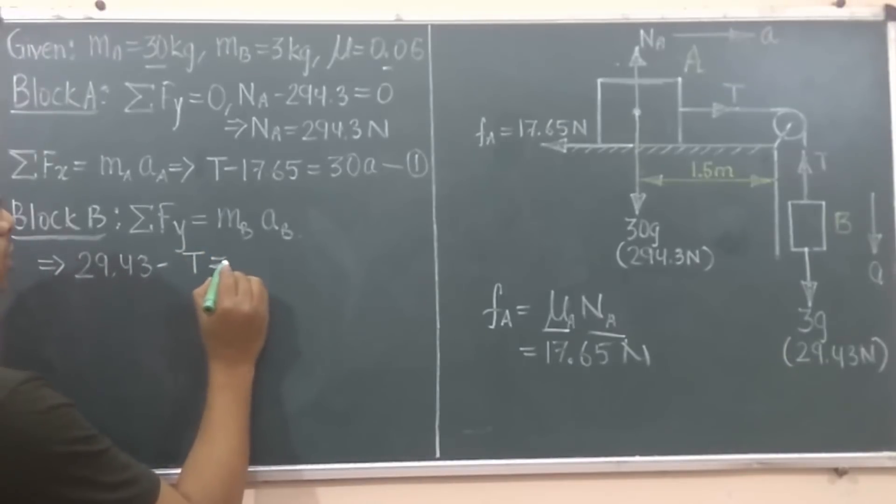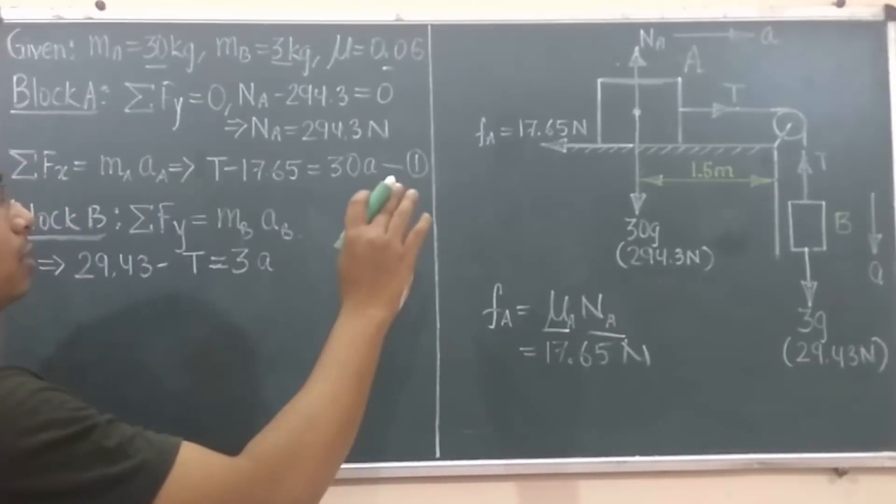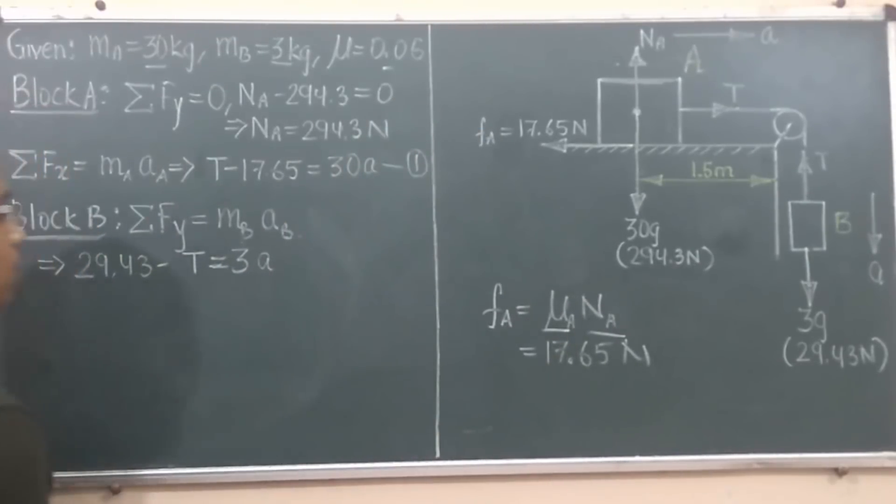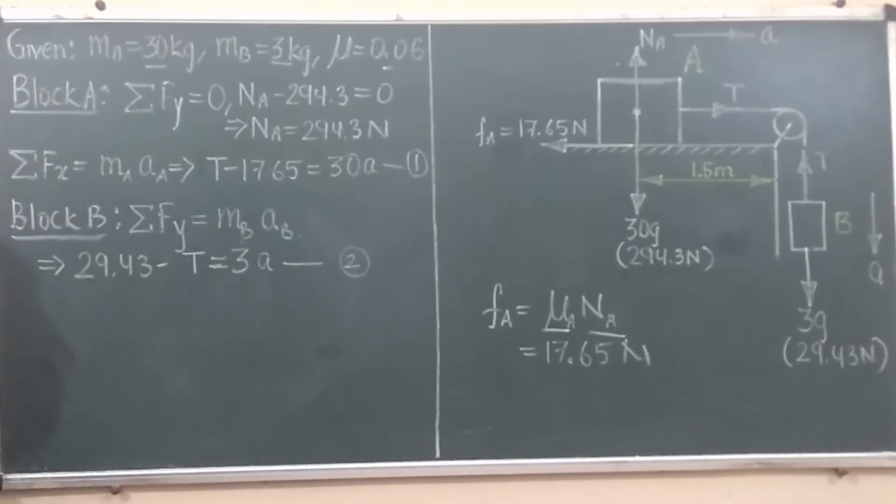So let's go ahead and do summation of all the forces in y direction for block B, which is a product of mass and acceleration. Here we go: 29.43 in the direction of motion minus tension T equals mass into acceleration, M_B, that's 3 times a_B. a_B is nothing but acceleration a only because both the accelerations are same. So you have this as your equation number two.